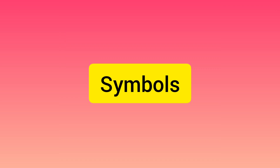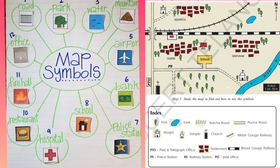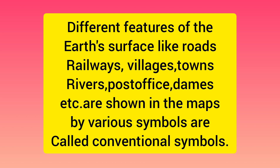Next, we will discuss the second topic: parts of a map. When you observe the screen, you are going to see different types of symbols. These symbols are used in the map to make it more convenient, because we can't represent all words on a map. To make it easy, we use different features represented by different symbols. A symbol is a different feature of the earth's surface — like roads, railways, villages, towns, rivers, post office, dams, etc. — shown on the map using symbols. Instead of writing names, we represent those places as symbols to keep the map clean and not cluttered. These symbols are also called conventional symbols.